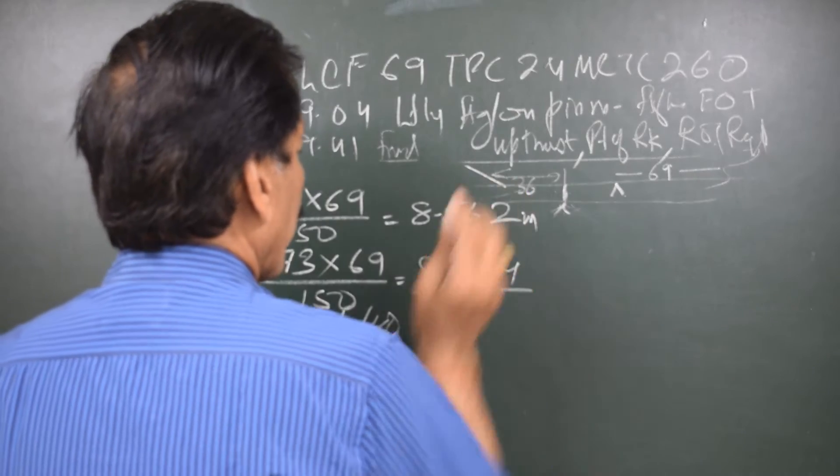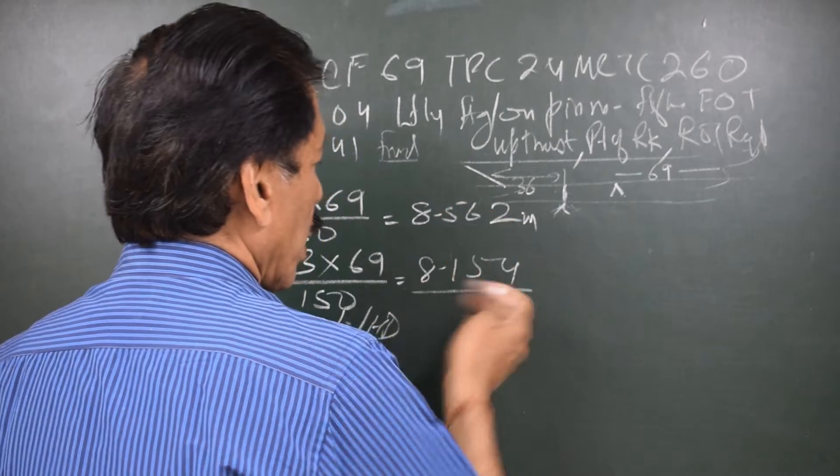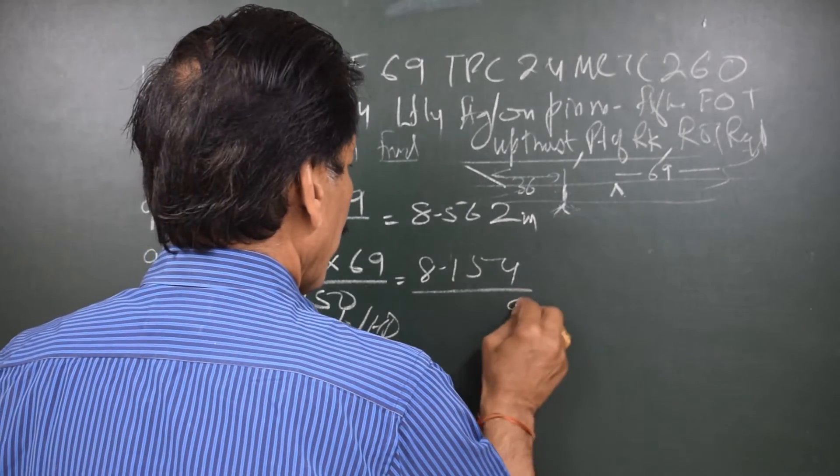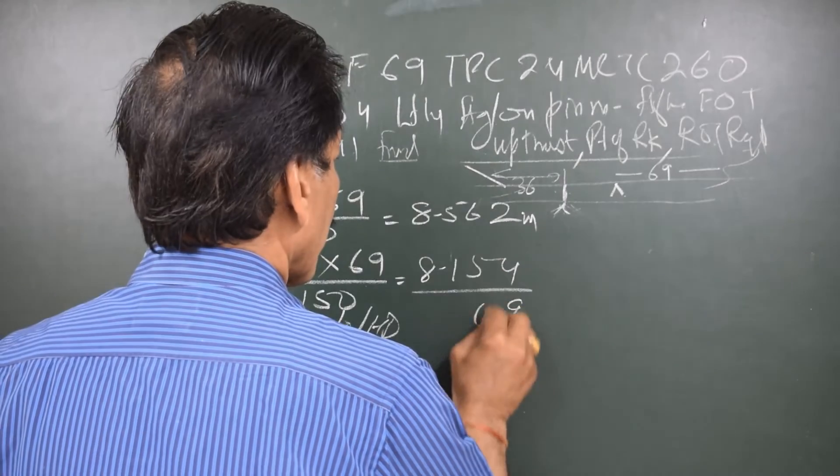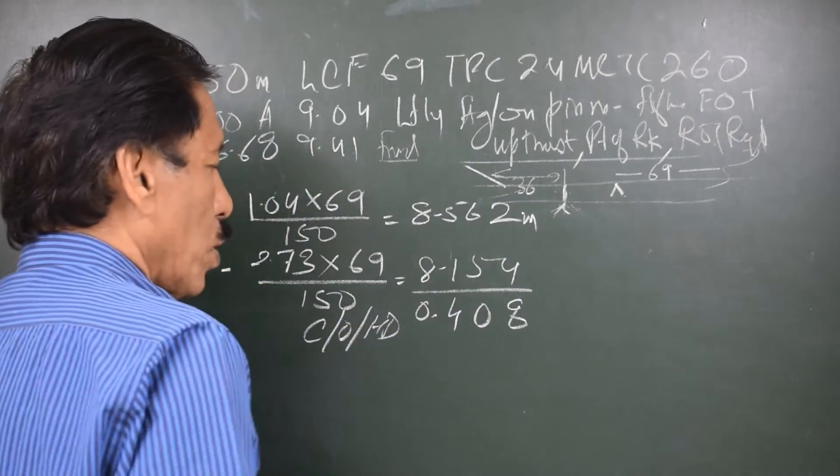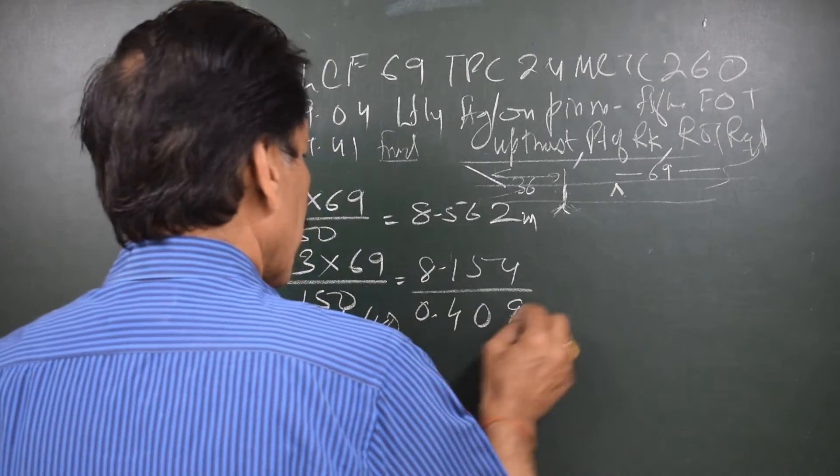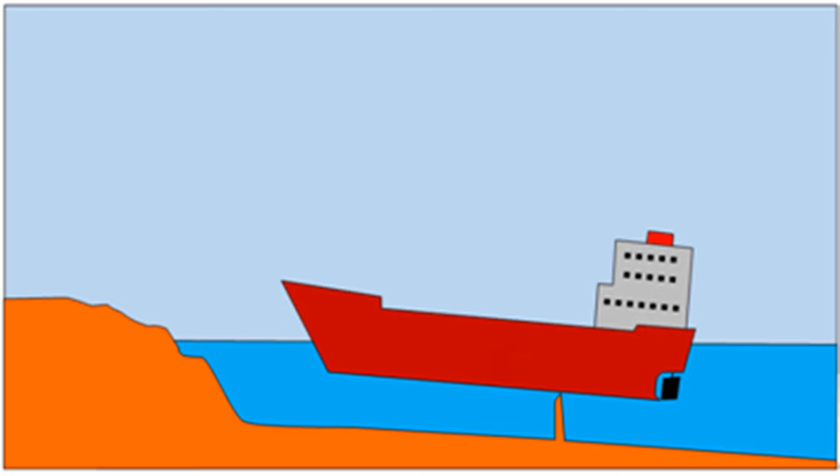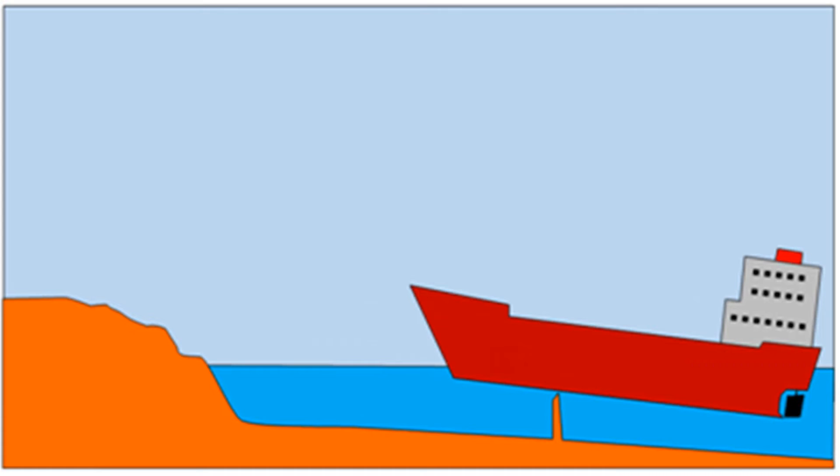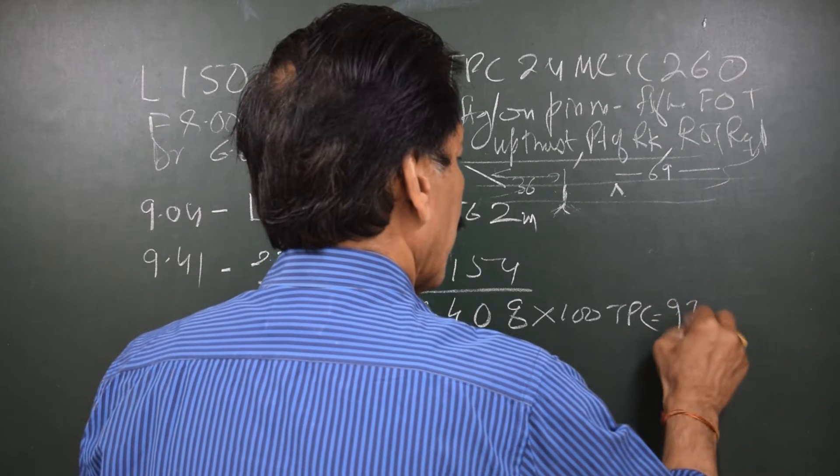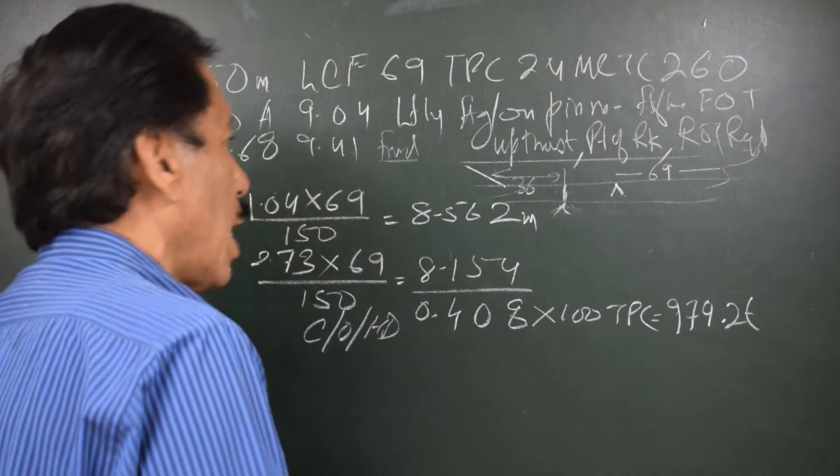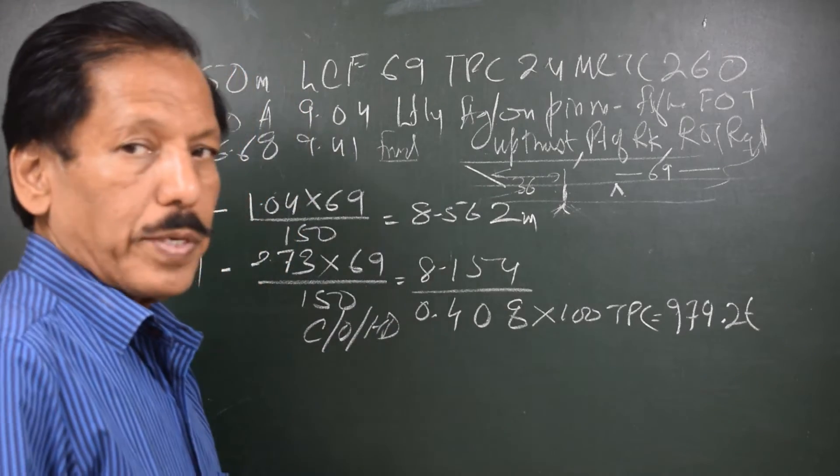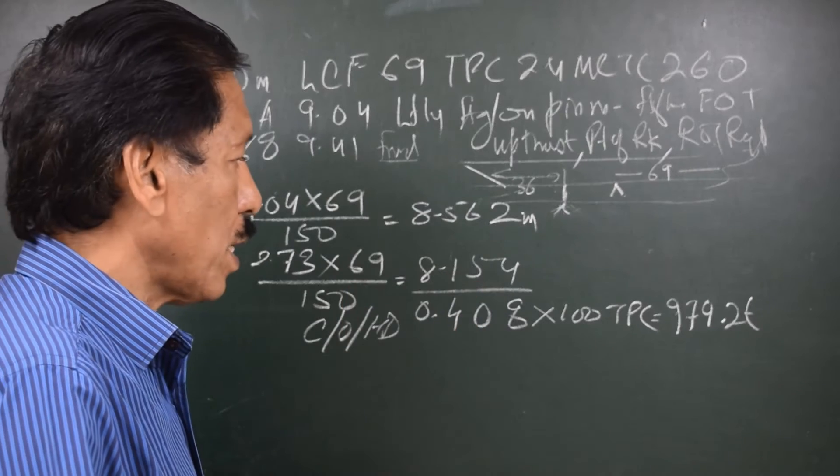Change of hydrostatic draft is initial minus final, so that is 0.408. 0.408 multiplied by 100 TPC, that is 2400, gives me 979.2. So this is the upthrust that is caused on the ship's hull at the pinnacle point.